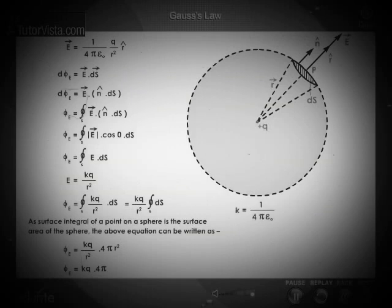Therefore, phi E is equal to 1 by 4 pi epsilon naught into Q into 4 pi R squared. Therefore, phi E is equal to Q by epsilon naught.